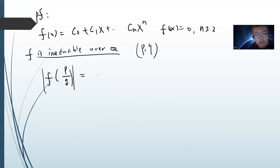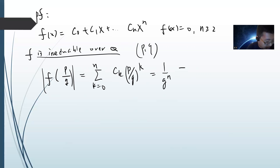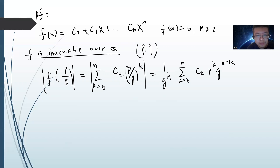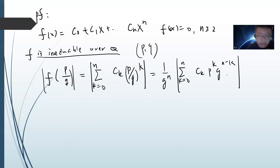Taking absolute value of q^n × f(p/q) — which equals the sum of cₖ × p^k × q^(n-k) from k=0 to n — this is some integer. And this integer cannot be 0, because f is irreducible over Q so it has no rational roots. Therefore |q^n × f(p/q)| ≥ 1, giving |f(p/q)| ≥ 1/q^n.